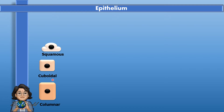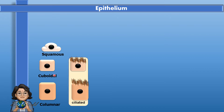Some cuboidal and columnar epithelial cells can also develop cilia on their surface. The presence of cilia makes them ciliated cuboidal epithelium or ciliated columnar epithelium. Epithelial tissues with ciliated cells are suited for movement of substances.